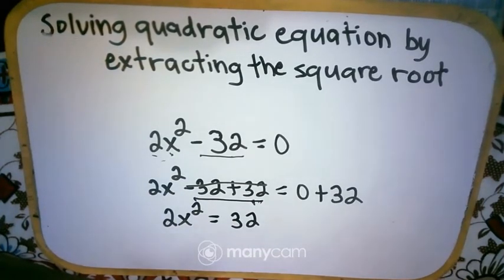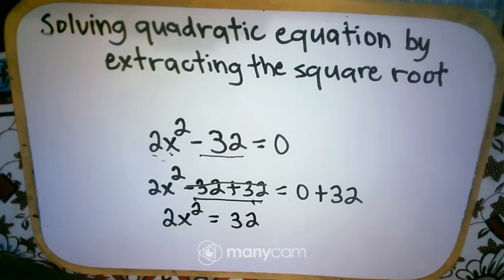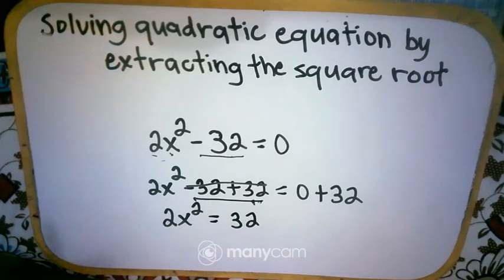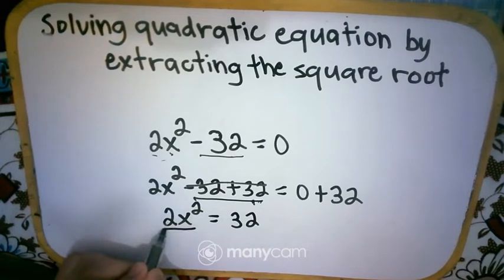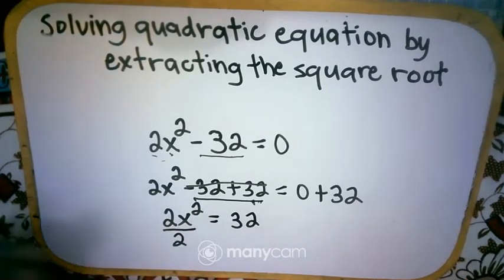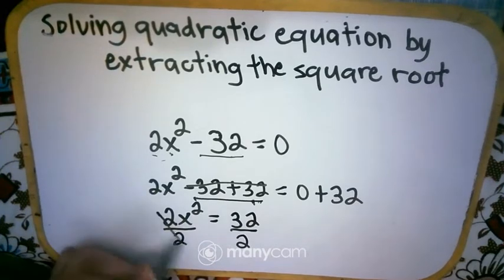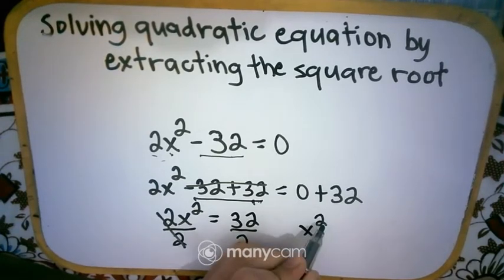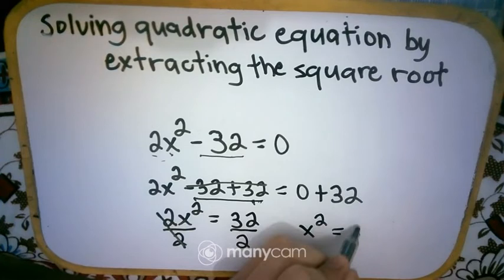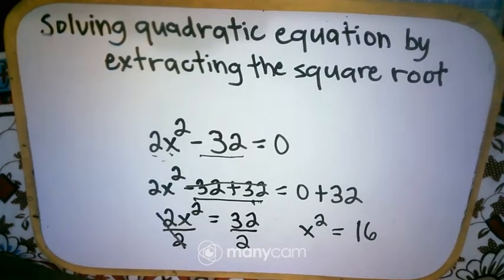Now we divide by 2. We can't easily apply the 'farthest number' rule between the 2 and x², so we divide first. Applying 'do it to the left, do it to the right': divide both sides by 2. Cancel: 2 divided by 2 is 1, giving us x² is equal to 16. Is the variable alone? Not yet — almost, but not quite.